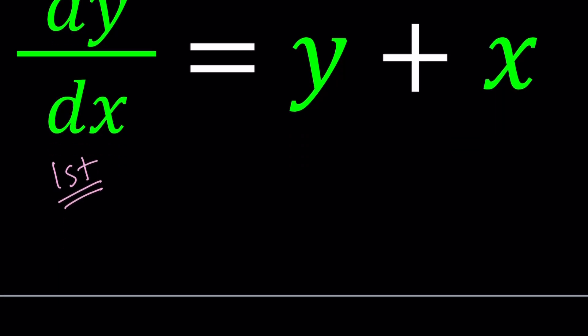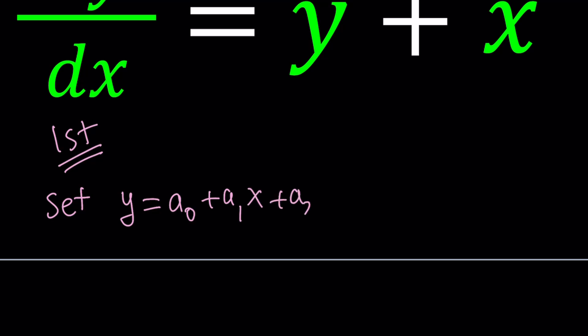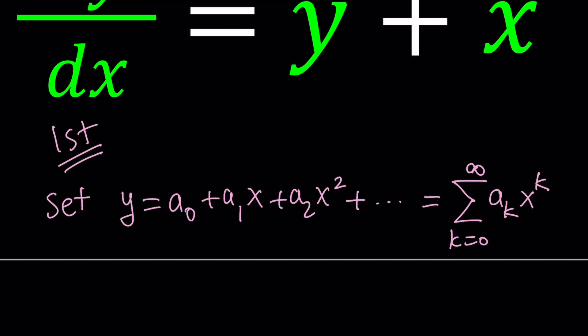For my first method, I'm going to use an infinite polynomial, also known as a power series. We're going to set y equal to a sub 0 plus a sub 1 x plus a sub 2 x squared, and so on. This is going to go on forever — we multiply a sub k by x to the power k. We can also express this using sigma notation: sigma from k equals 0 to infinity of a sub k times x to the power k. By starting k at 0, we get the first term as a constant.